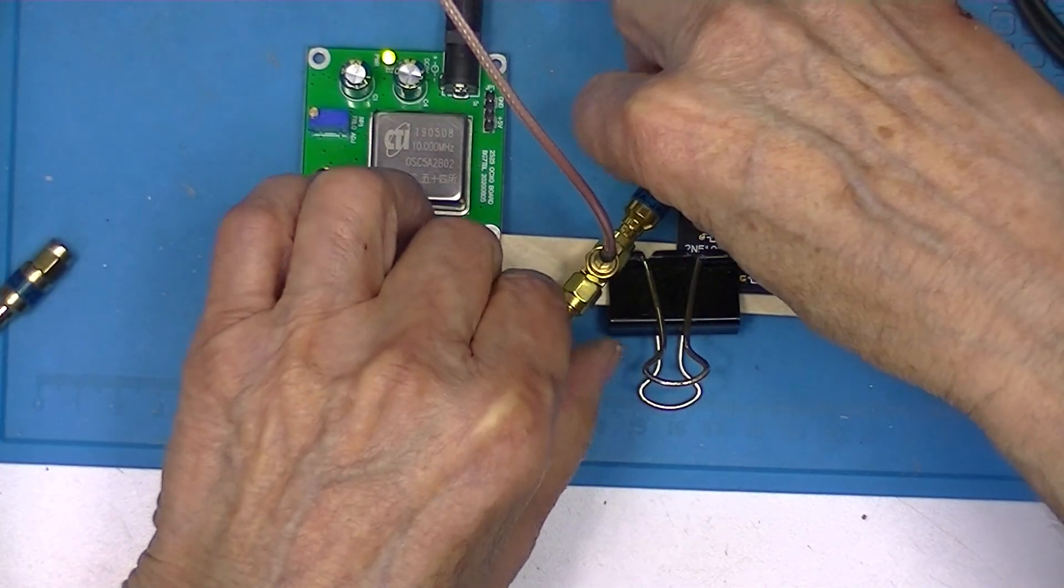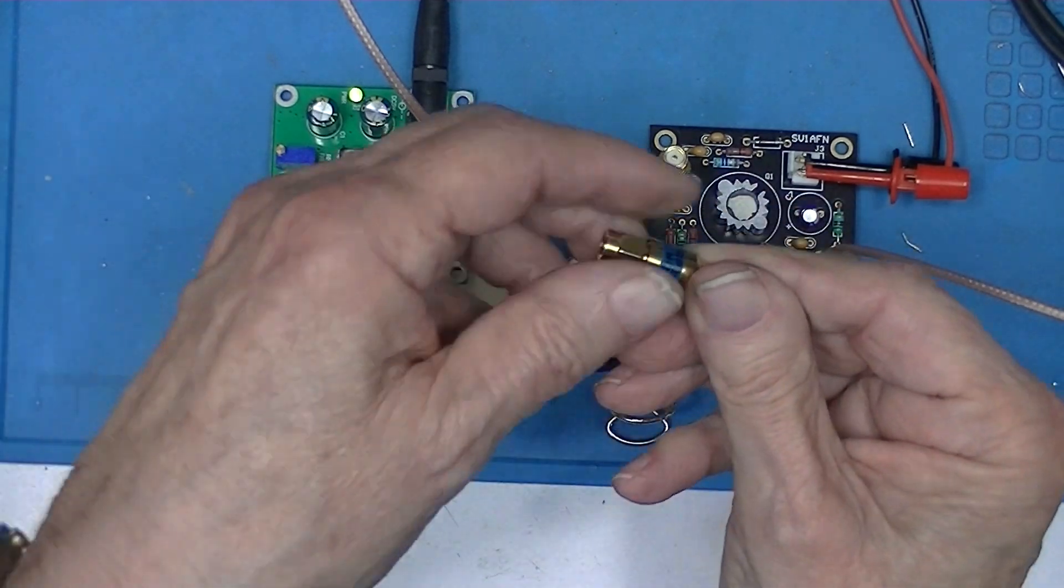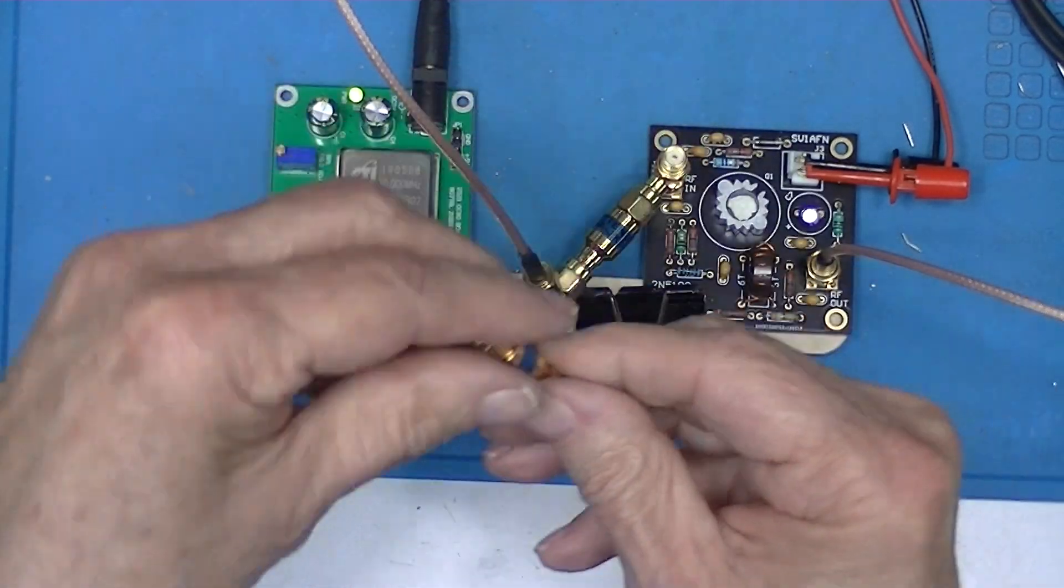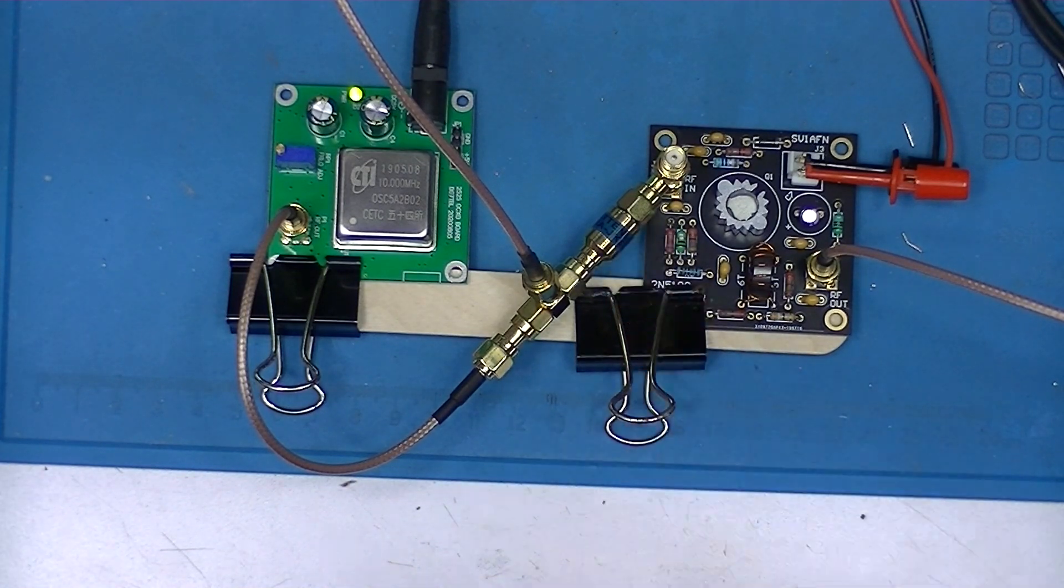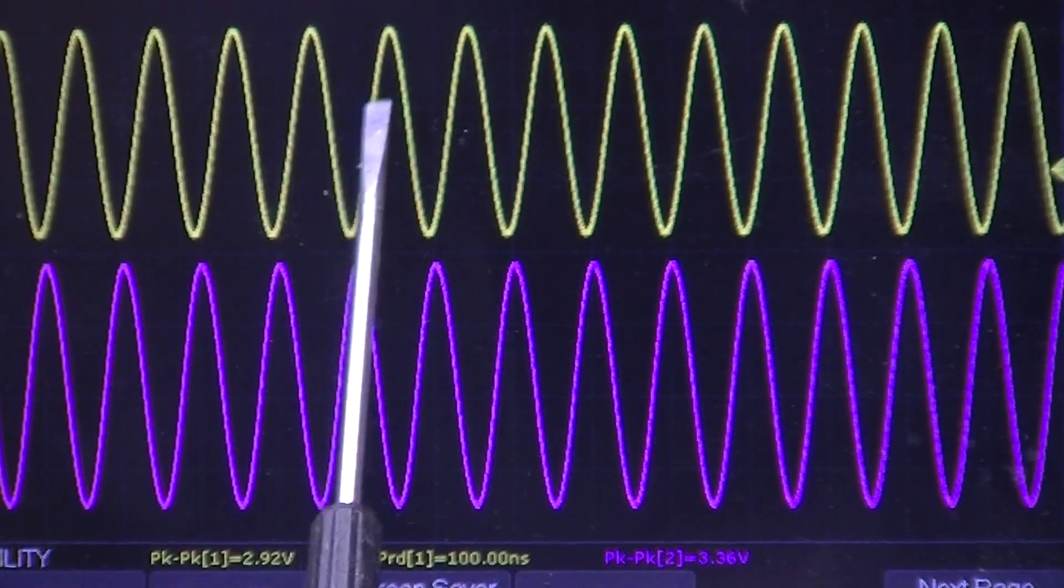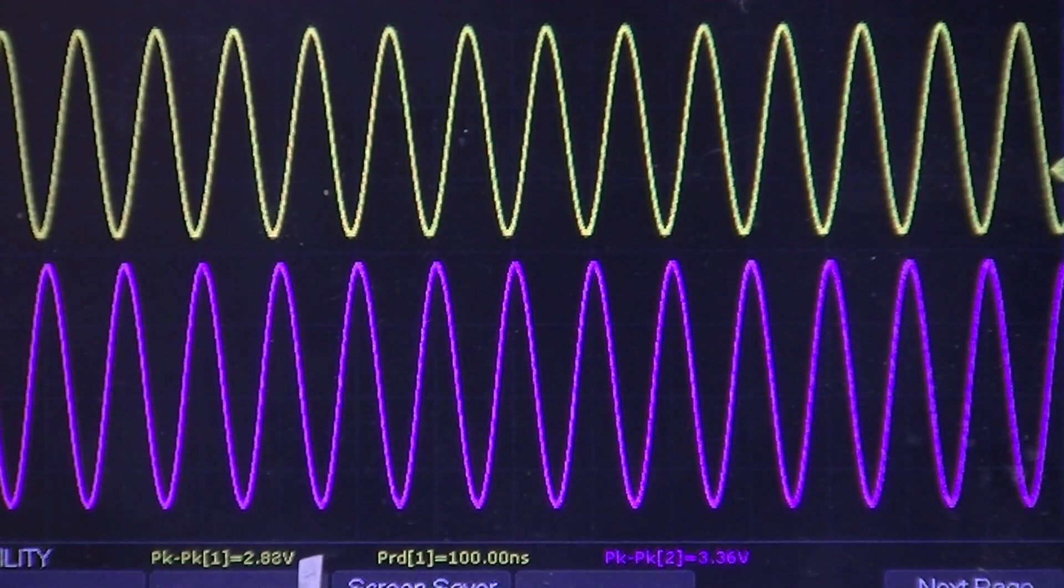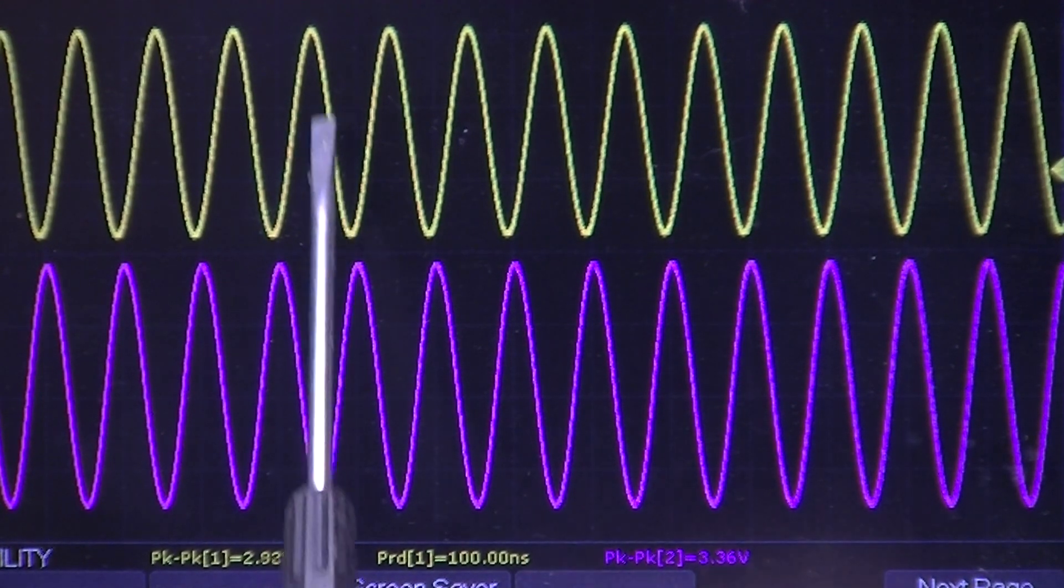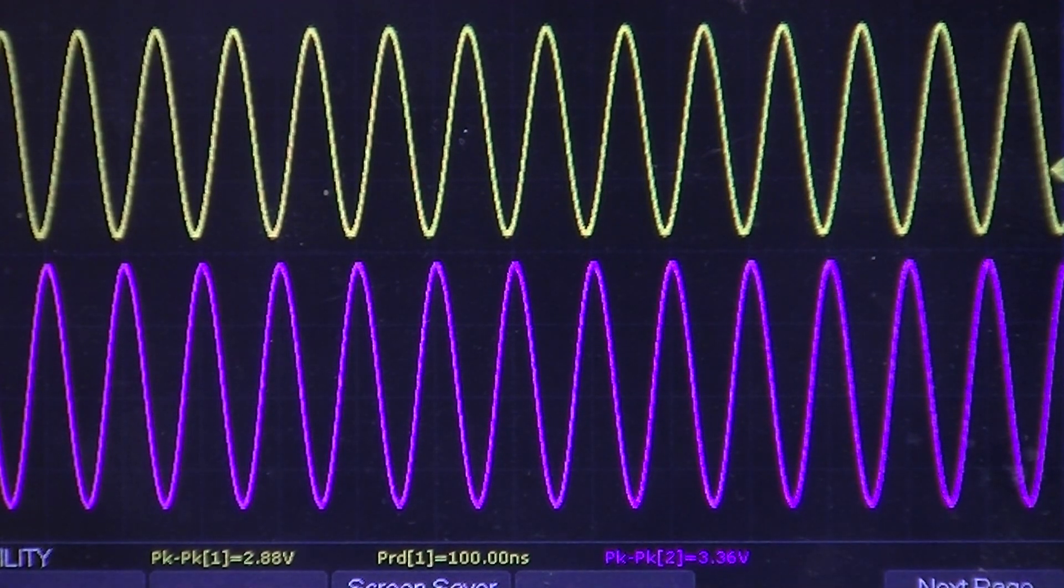I've replaced the 6 dB attenuator with a 15 dB attenuator. And now if we look at the oscilloscope, there's now about three volts peak to peak being delivered by the oscillator.